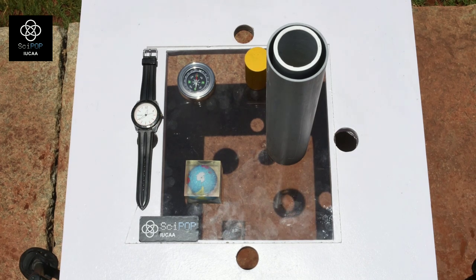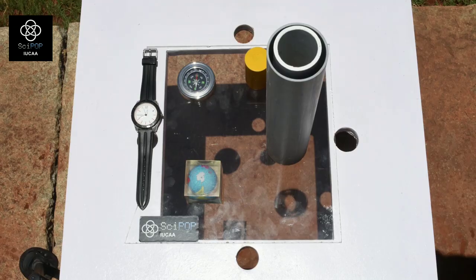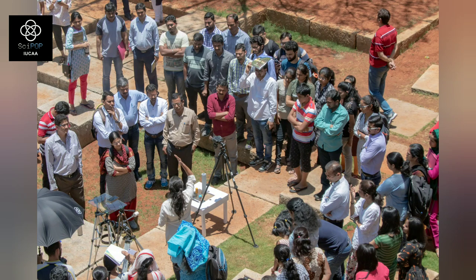For Pune, zero shadow day occurs on May 13 and July 13 at 12:30.